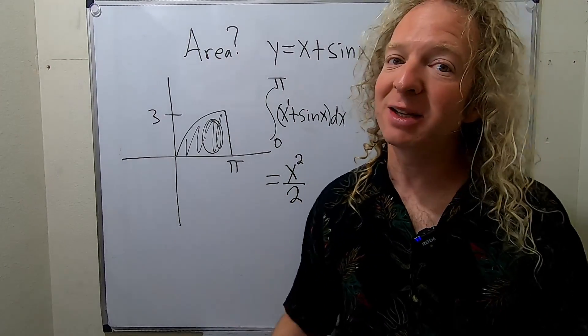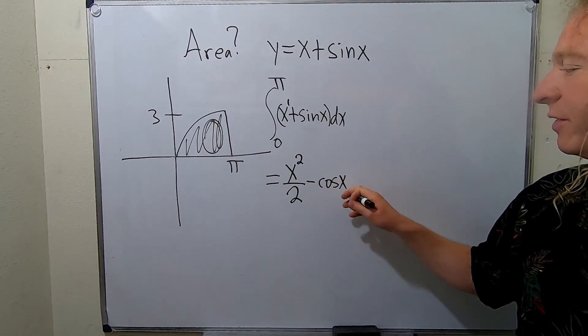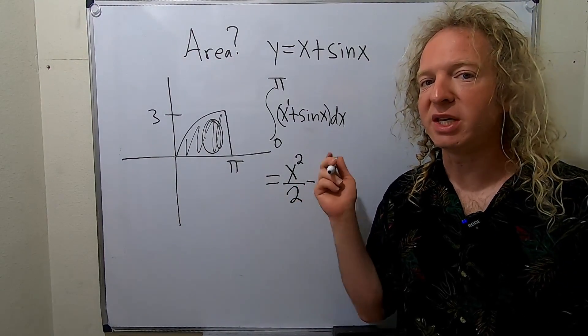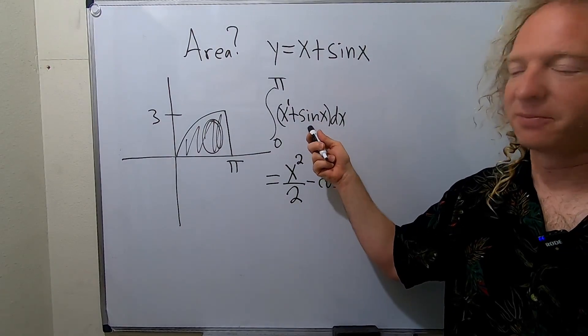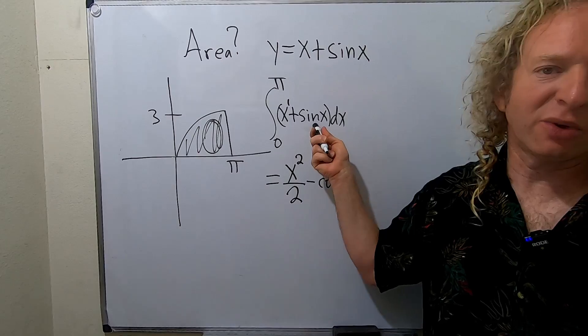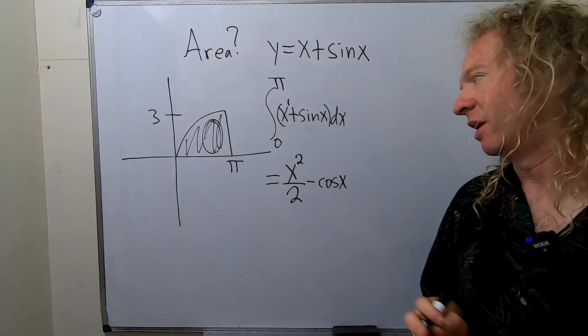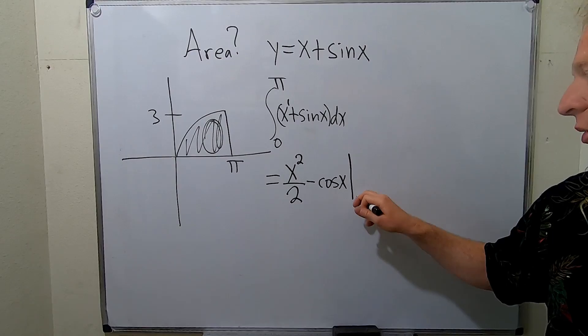To integrate sine that's going to be negative cosine. The reason is because if you take the derivative of cosine you get negative sine, but there's already a negative here so it'll make it positive. So the derivative of this is negative sine but negative and negative is positive. So when you integrate sine you do get negative cosine. I'll just put a line here and we're going from zero to pi.